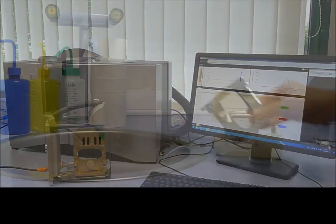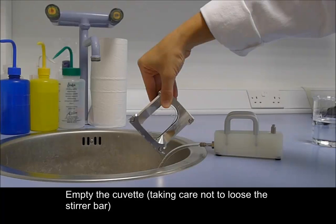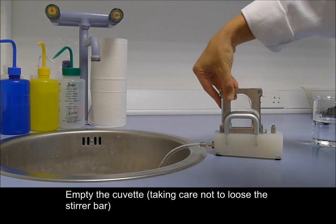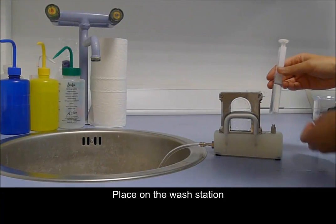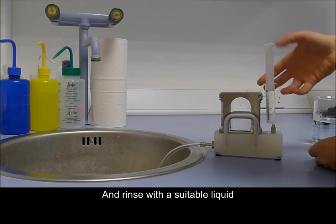Once removed, we can empty out the cuvette, taking care not to lose the stirrer bar, and then place the empty cuvette onto the wash station. The wash station can then be used to rinse the cuvette with a suitable liquid.